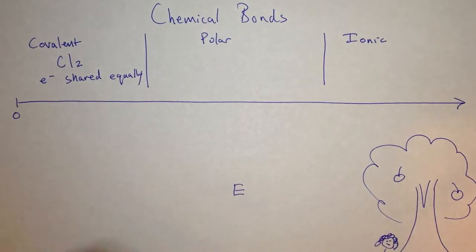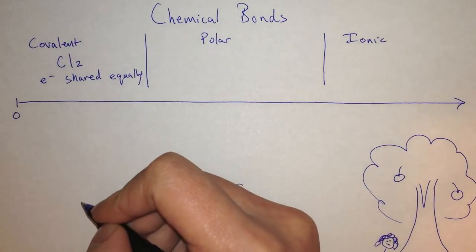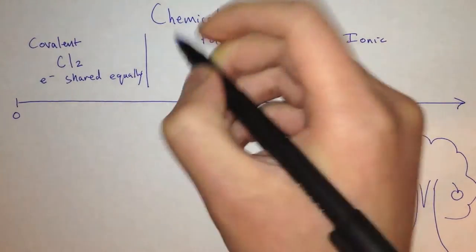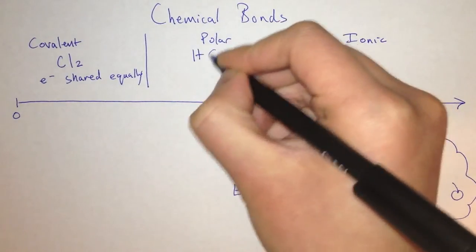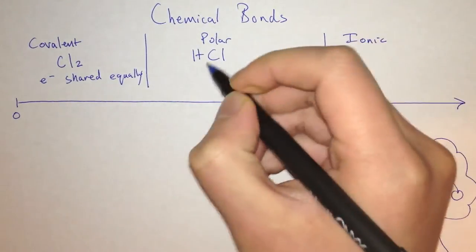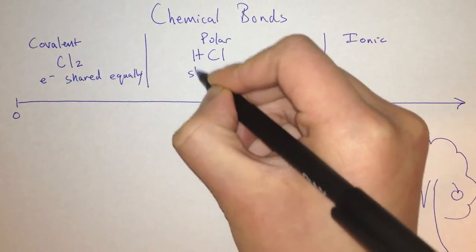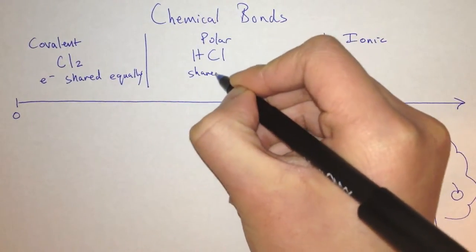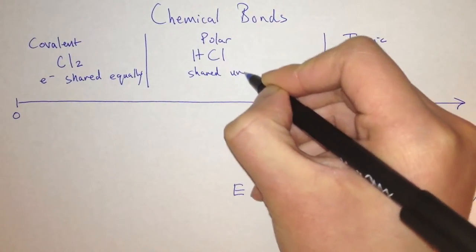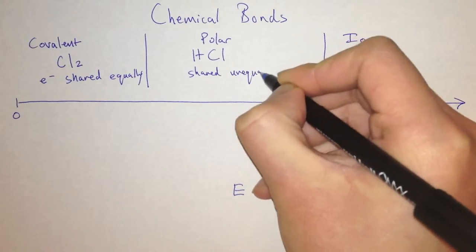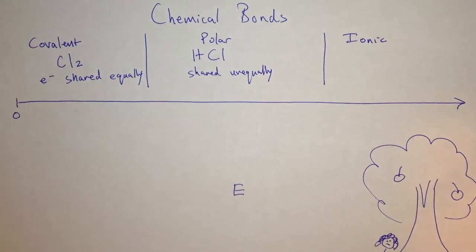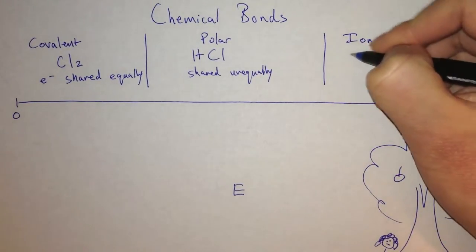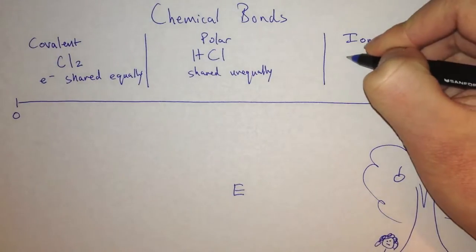In a polar covalent bond, the electrons are shared unequally, for example HCl. And in an ionic bond, we say that the electrons are transferred.